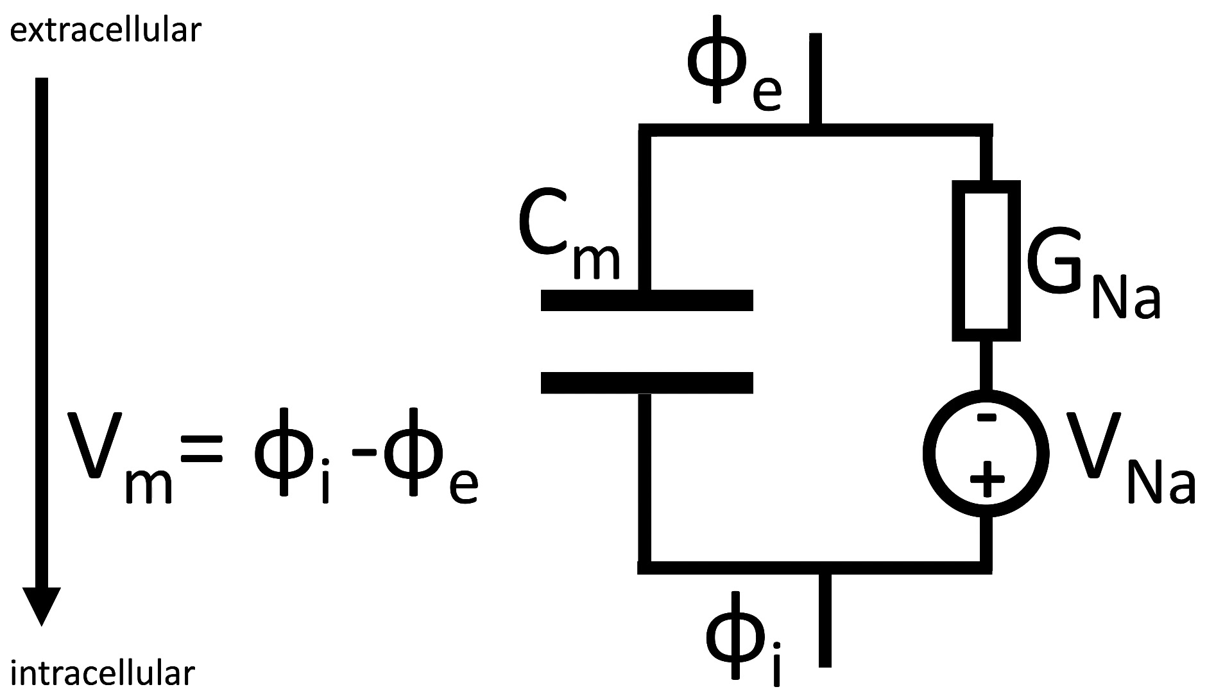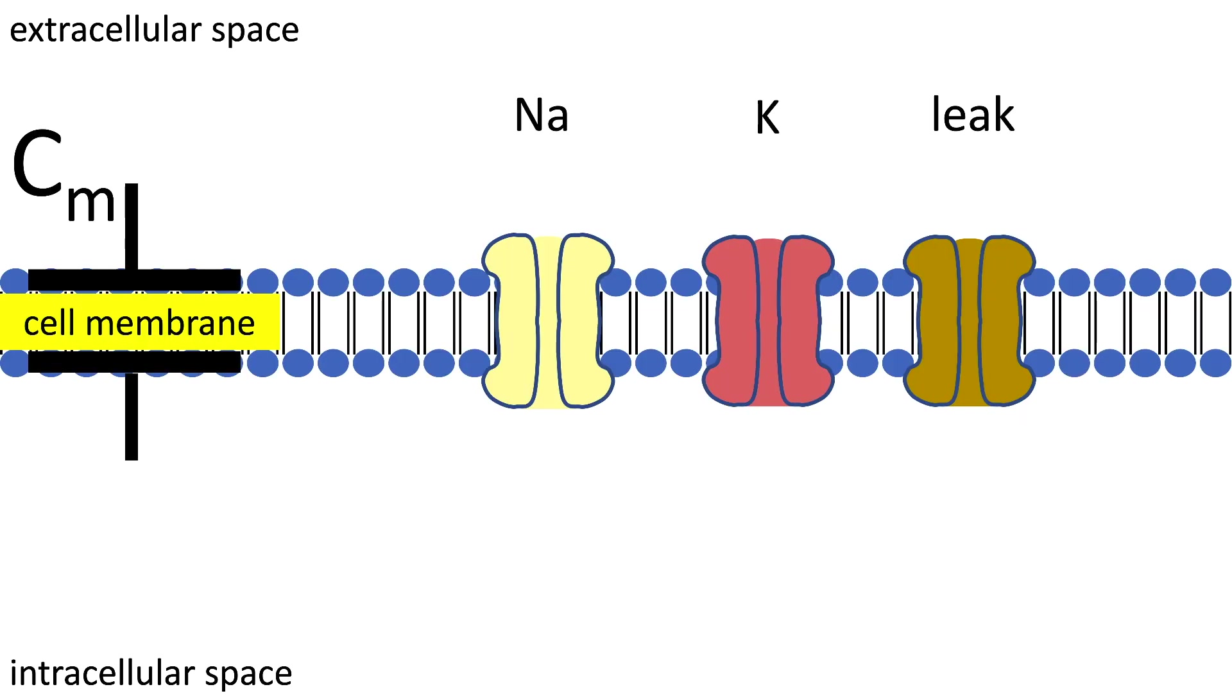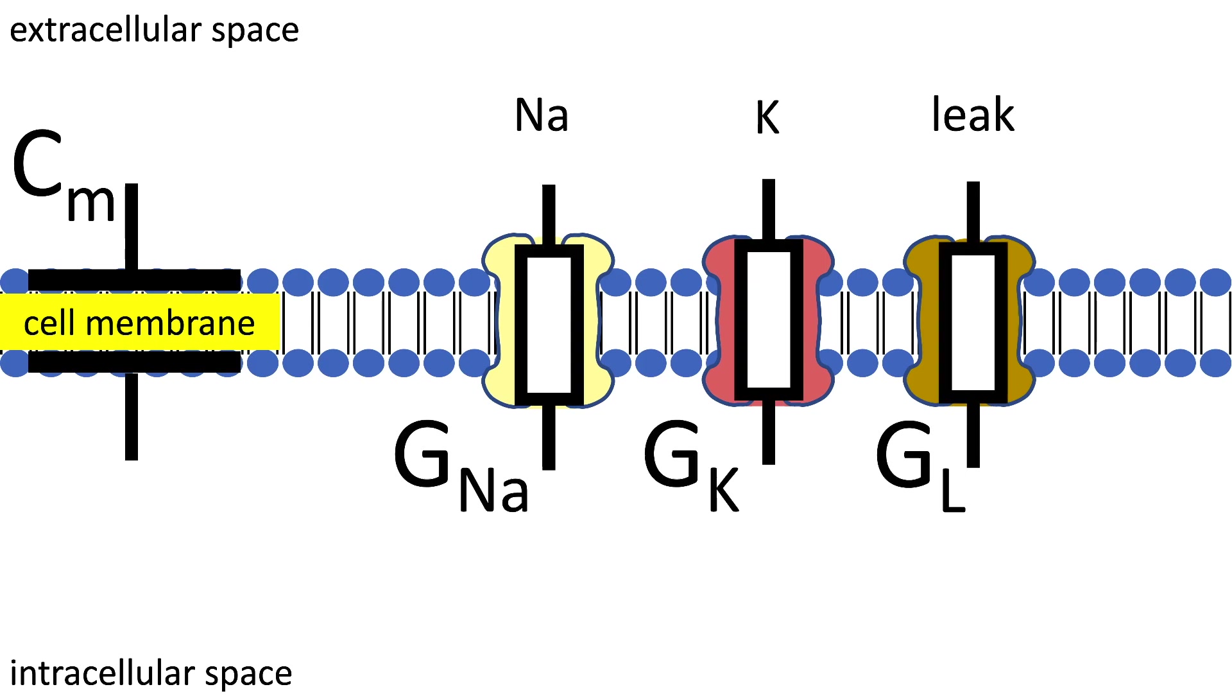As you remember we have three different channels: the sodium, potassium, and leak channel. And we want to represent all our channels with their respective conductances. This leads to the following circuit.